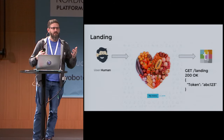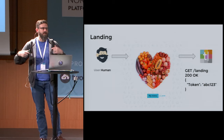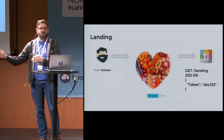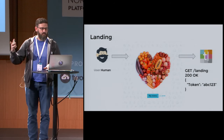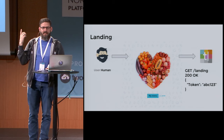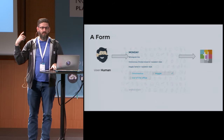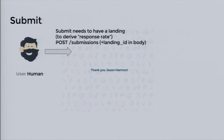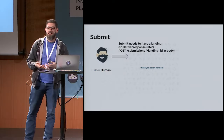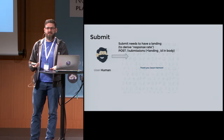I would normally not even cover this topic because it seems so basic, but I was surprised to find that we actually had this and it caused a bug. When a user lands on a form — in our case, a weekly lunch menu form at the office — it's a GET for landing that gives us a landing token. That token lets us, once the user answers all the questions and submits, associate the submission with a landing so we can calculate response rate. And this worked great most of the time.